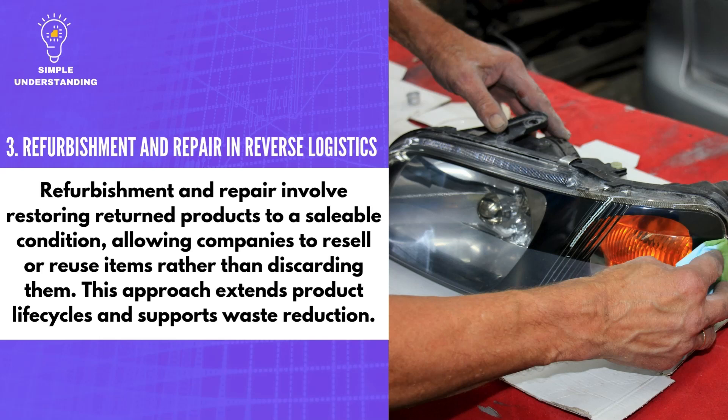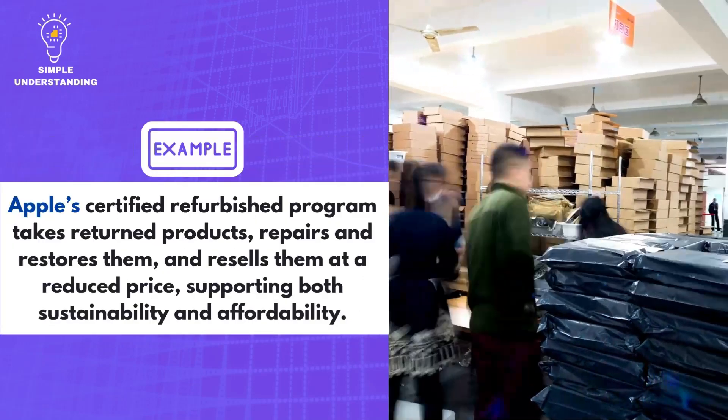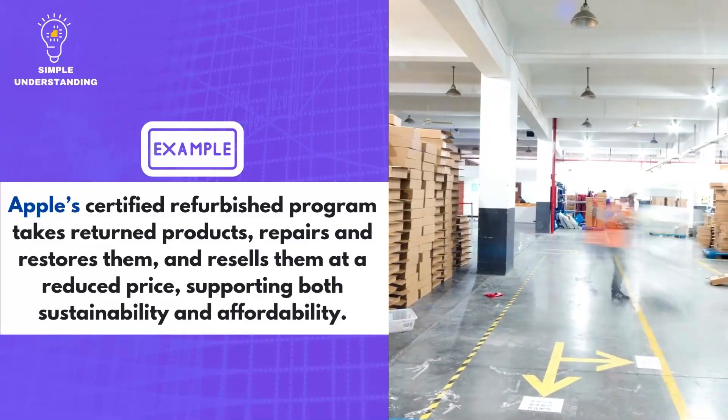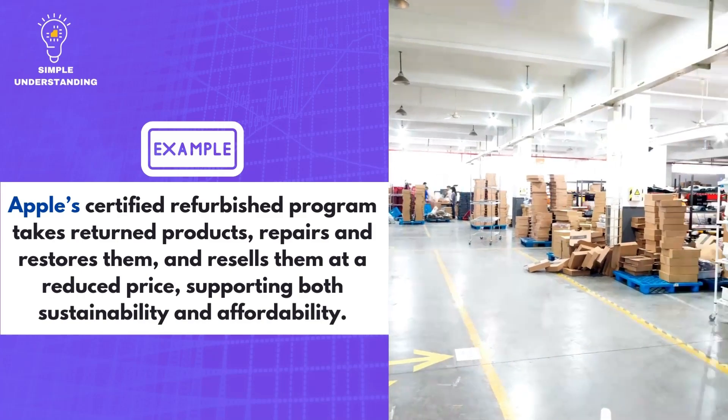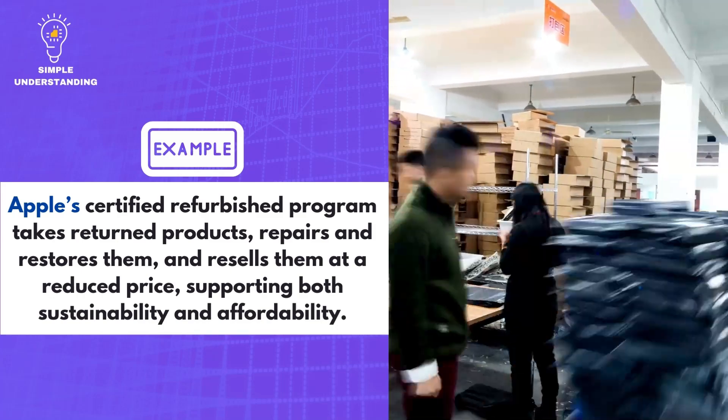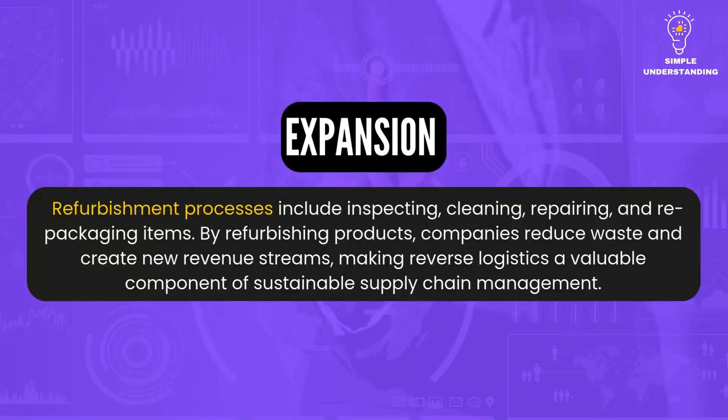3. Refurbishment and Repair in Reverse Logistics. Refurbishment and repair involve restoring returned products to a saleable condition, allowing companies to resell or reuse items rather than discarding them. This approach extends product life cycles and supports waste reduction. Apple's Certified Refurbish Program takes returned products, repairs and restores them, and resells them at a reduced price, supporting both sustainability and affordability. Refurbishment processes include inspecting, cleaning, repairing, and repackaging items, reducing waste and creating new revenue streams.